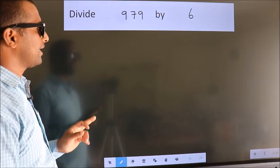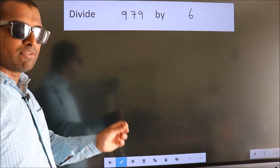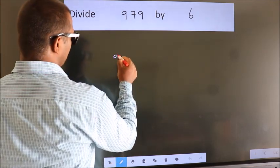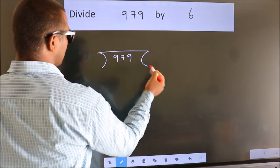Divide 979 by 6. To do this division, we frame it this way: 979 here, 6 here.